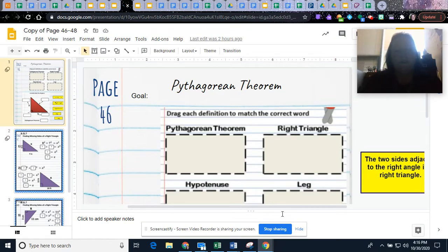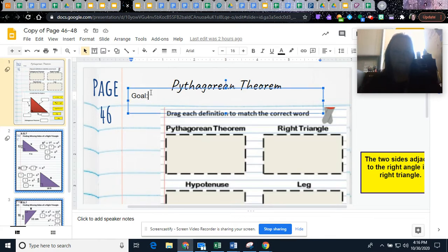Hi, I'm going to take a few minutes and go through your notes on pages 46 to 48. We are going to start the Pythagorean Theorem. Our goal today is I can find the length of the third side of a right triangle.